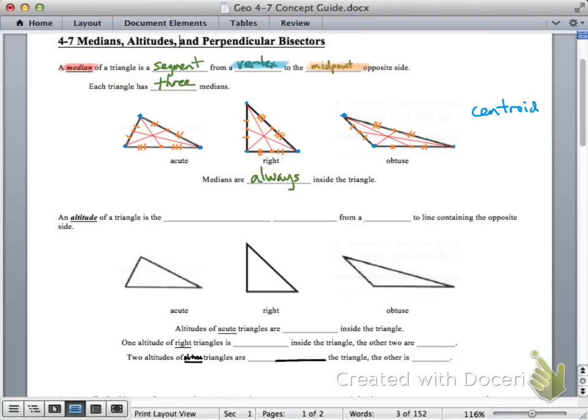On to altitudes. An altitude of a triangle is the perpendicular segment from the vertex to the line containing the opposite side. Now these are different depending on which type of triangle that you have.